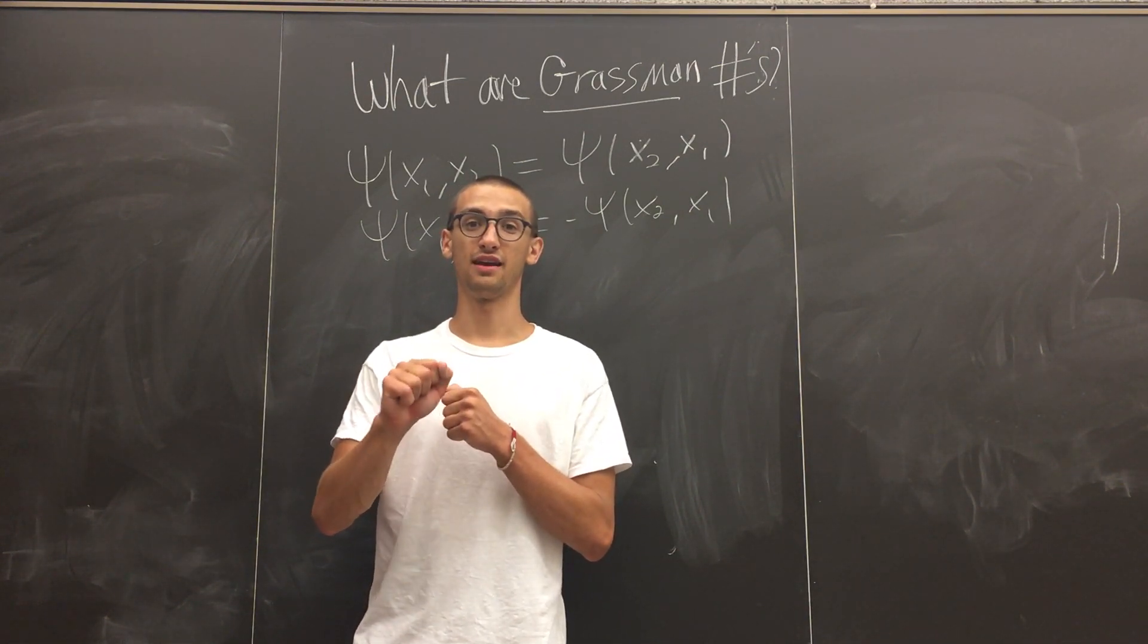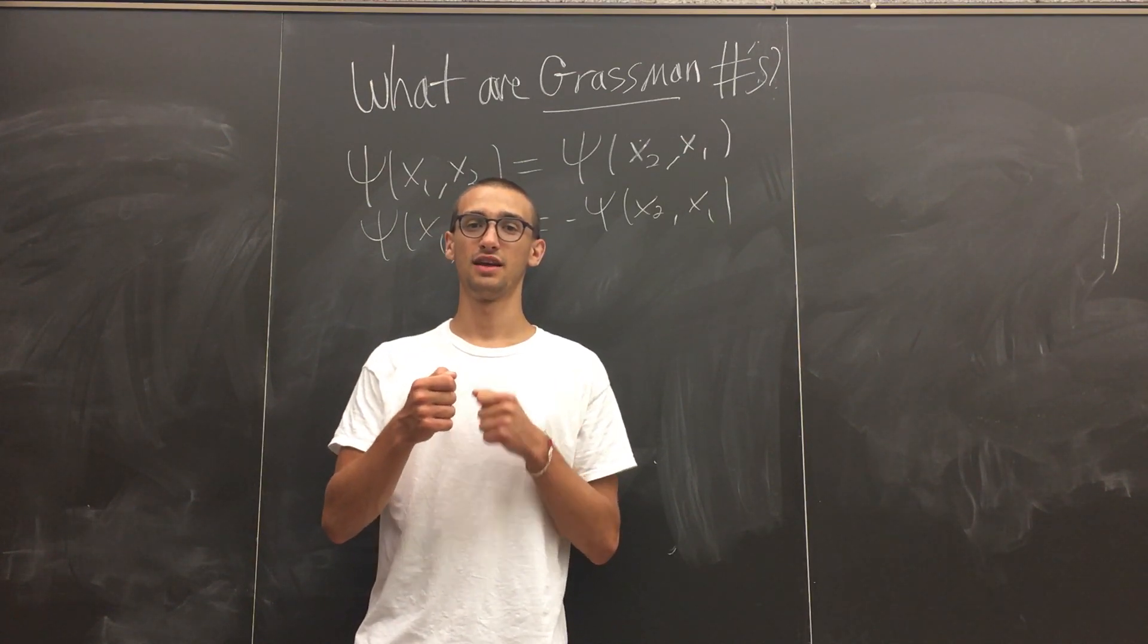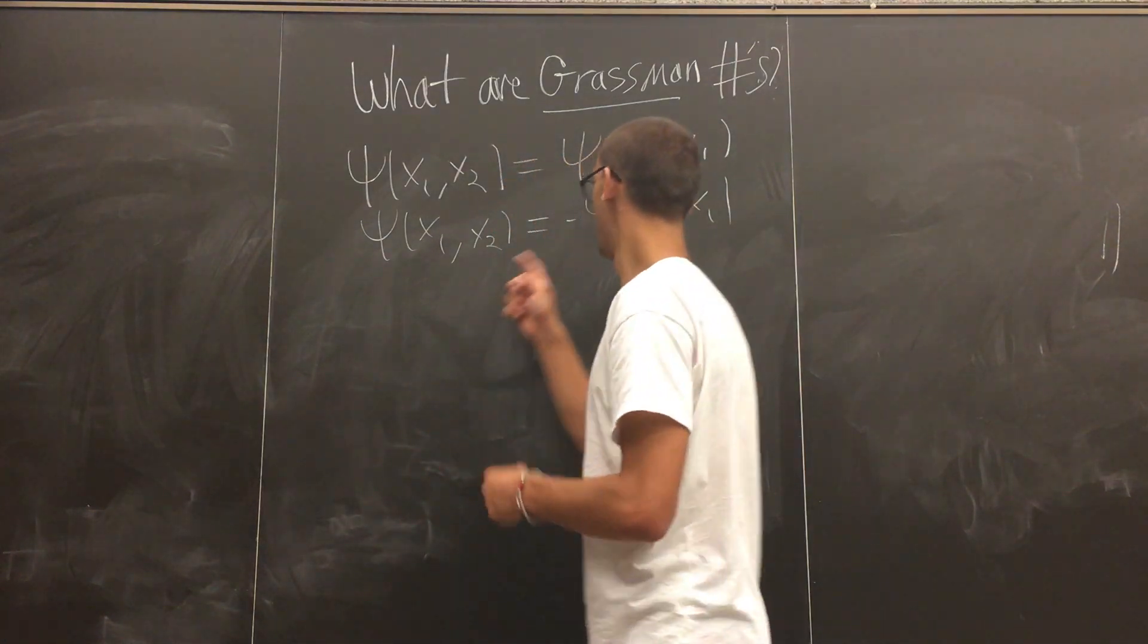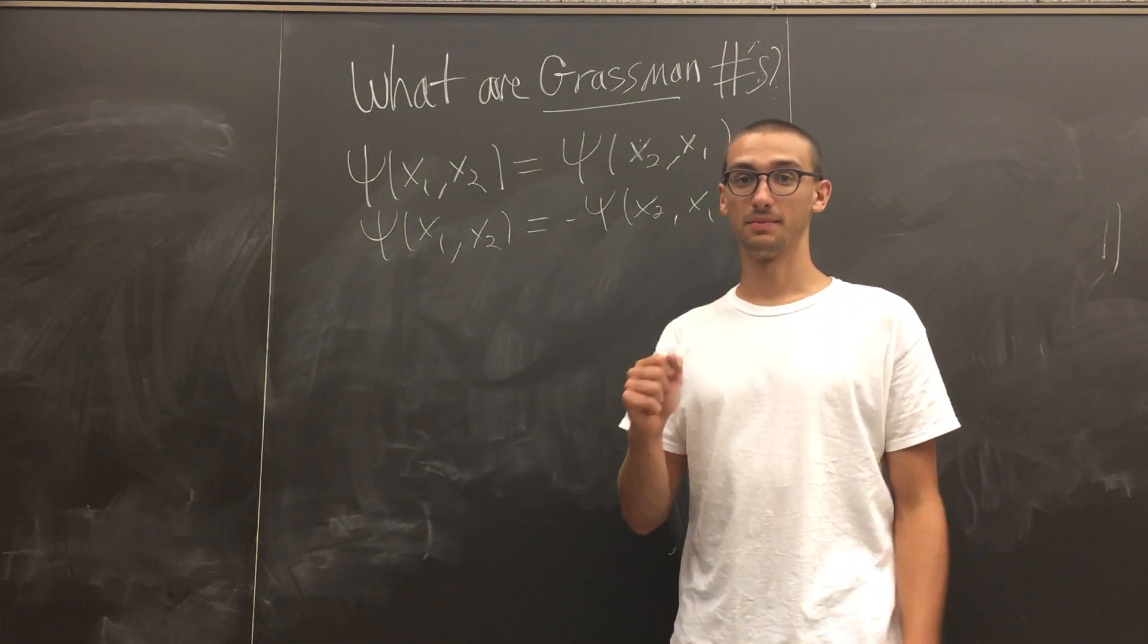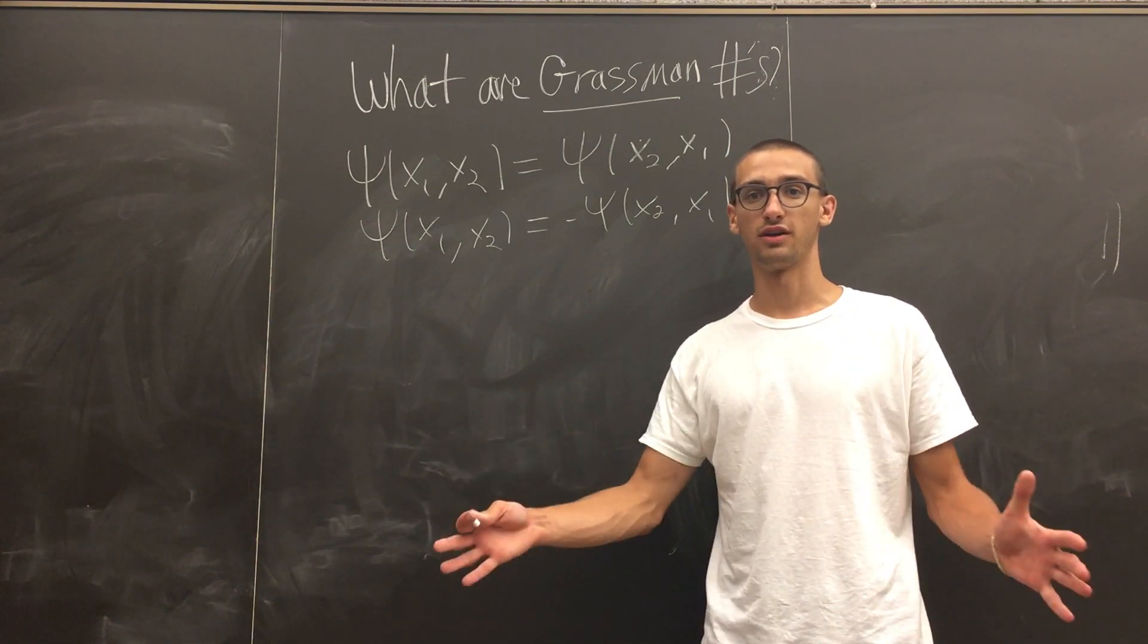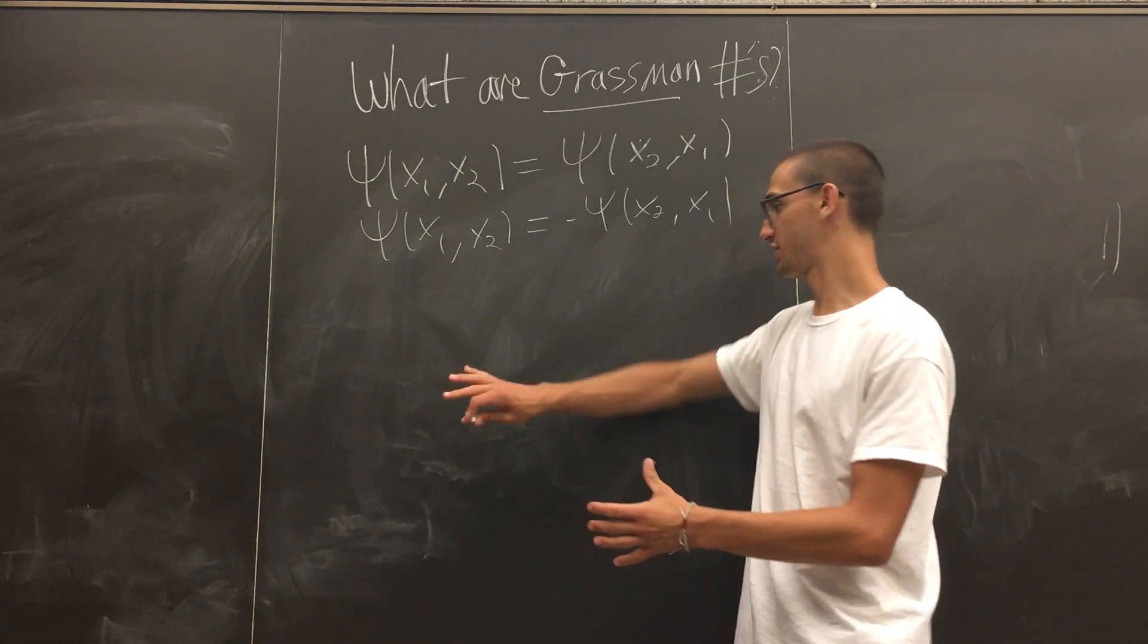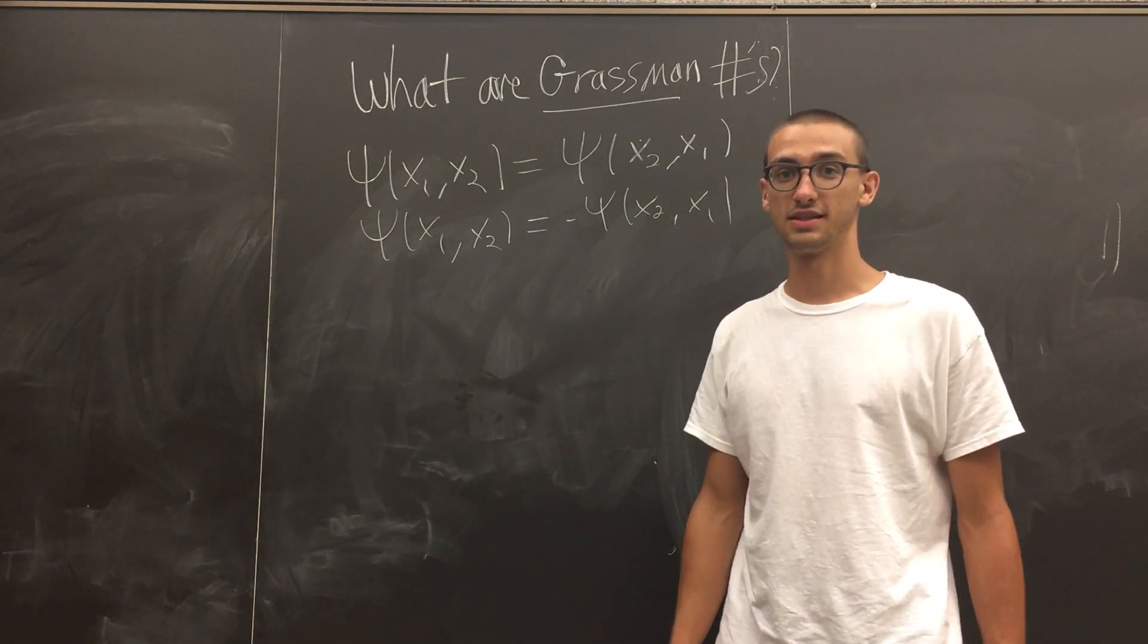Now, it's not a force carrying repulsion or attraction. It's just because two fermions cannot occupy the same state, the Pauli exclusion principle. So that's why everything you see around us is made of matter. And we could actually see it, we could touch it, because two fermions, two electrons, cannot be in the same state.